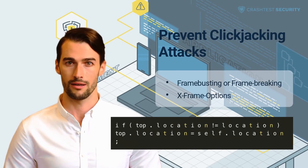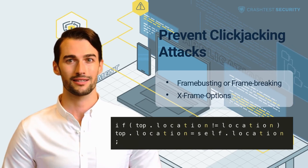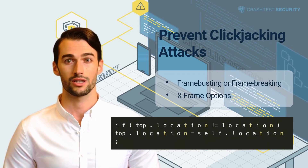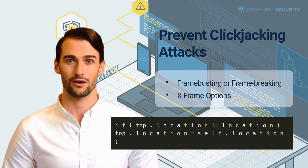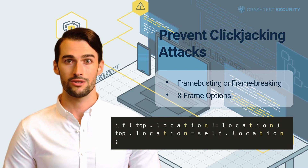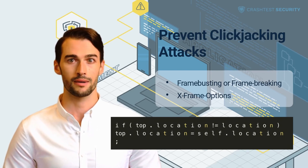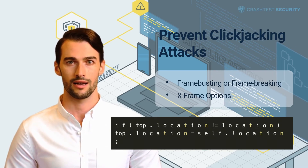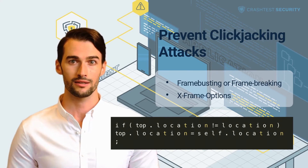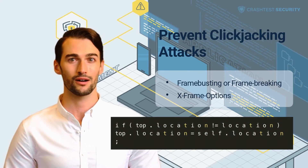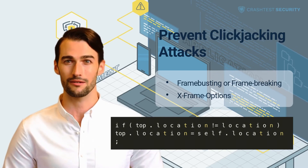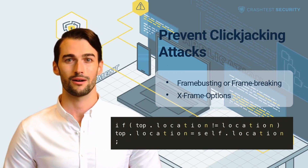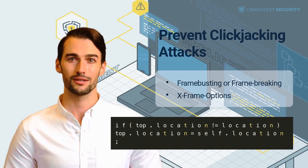Since attackers frame the targeted web page with malicious iframes, most clickjacking attack mitigation techniques revolve around restricting framing. Frame Busting or Frame Breaking: Frame busting is a client-side mitigation technique that involves the use of code to prevent a web page from being loaded within a frame. Developers annotate code with a frame-breaking script that consists of a conditional statement and a counteraction that eliminates the overlay. An example of a simple frame-busting script is shown in the video. Frame busting can protect web pages loaded in all significant and legacy browsers since the modification is done to HTML code, not HTTP headers.